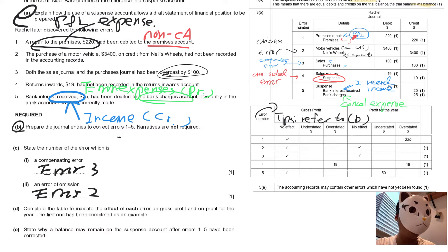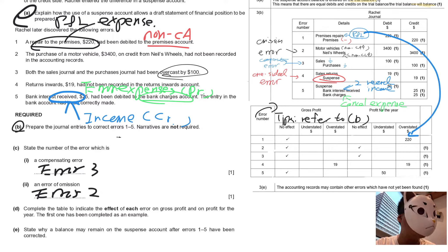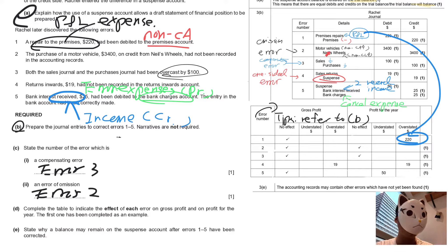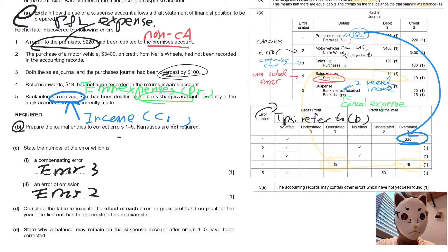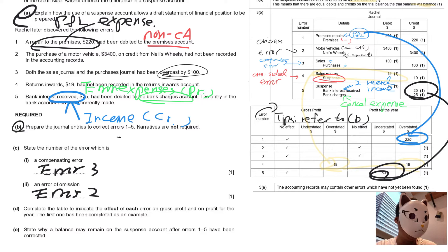Looking at error 1: we debit P&L, which means this deducts the profit — it's an expense. For error 2: nothing related to P&L. For error 3 (compensating error): nothing either. For error 4 (sales return): this must be recorded, and it directly affects net profit. For the last error: income increases by $25 and expenses drop by $25, so the profit increases by a combined effect.